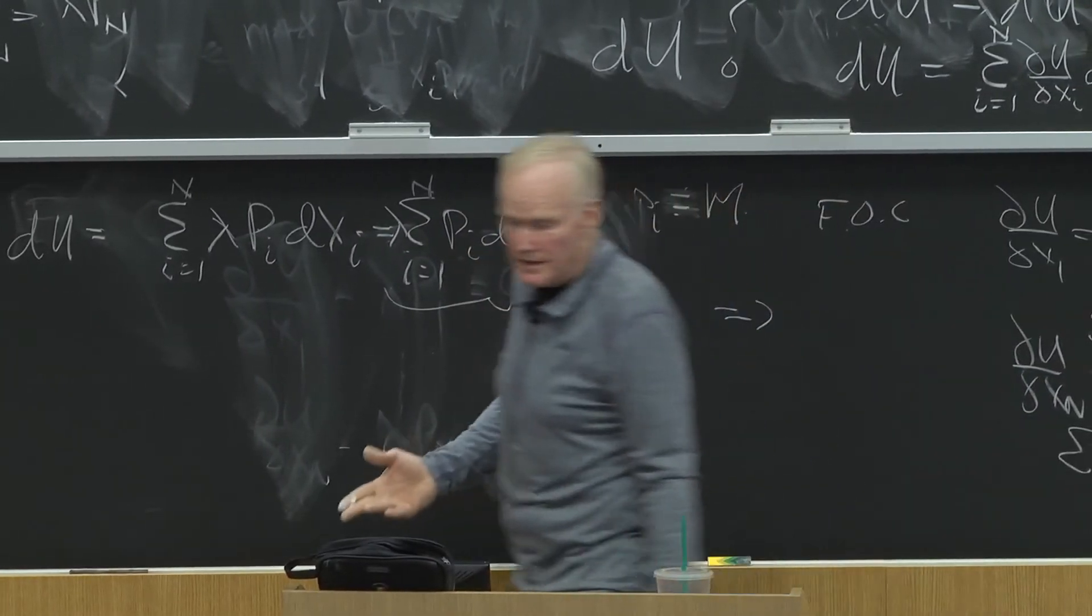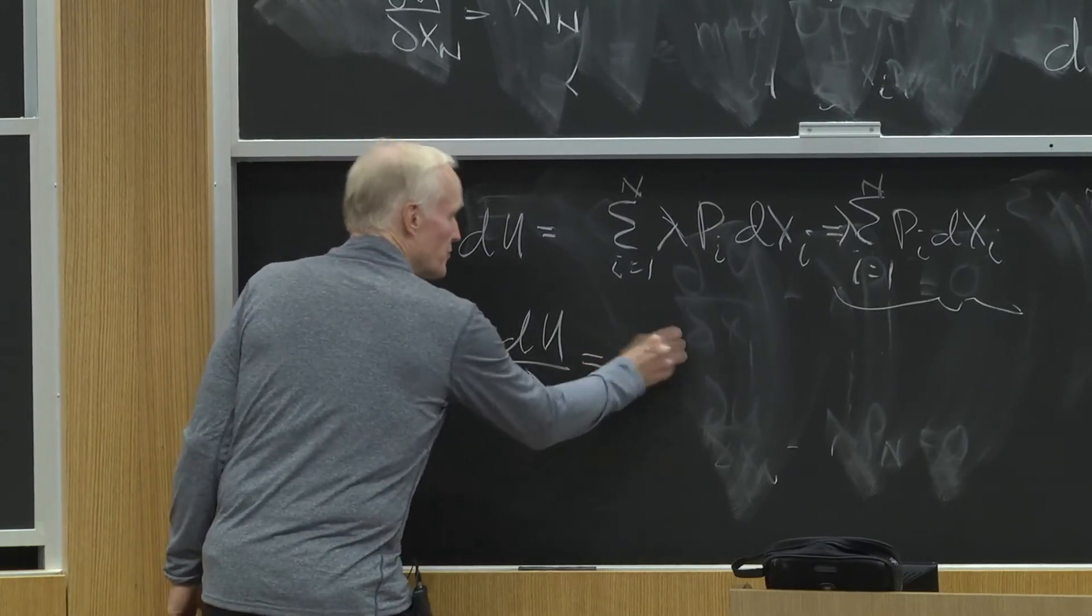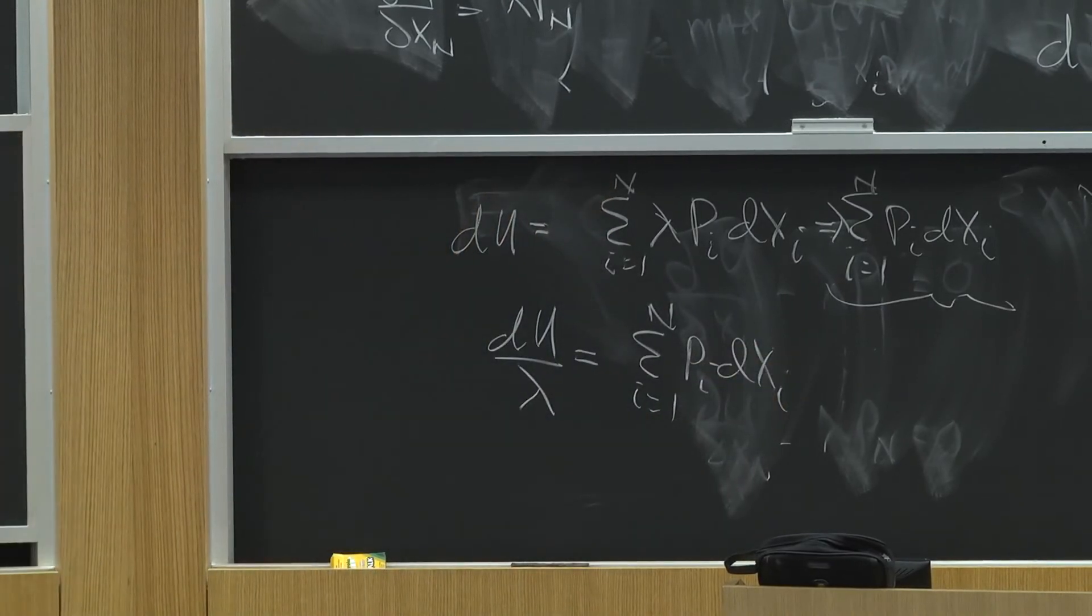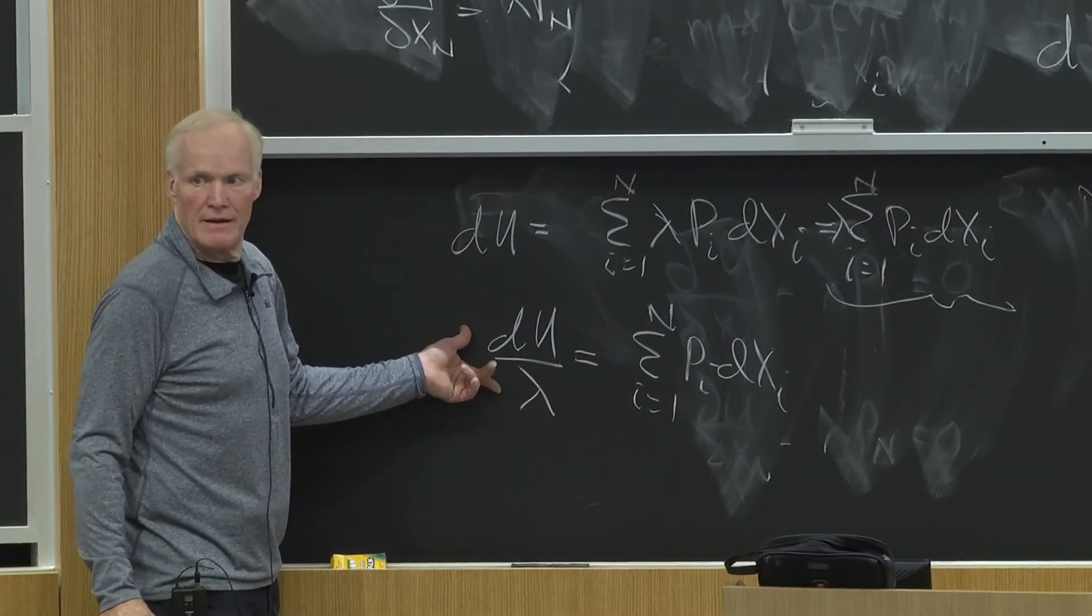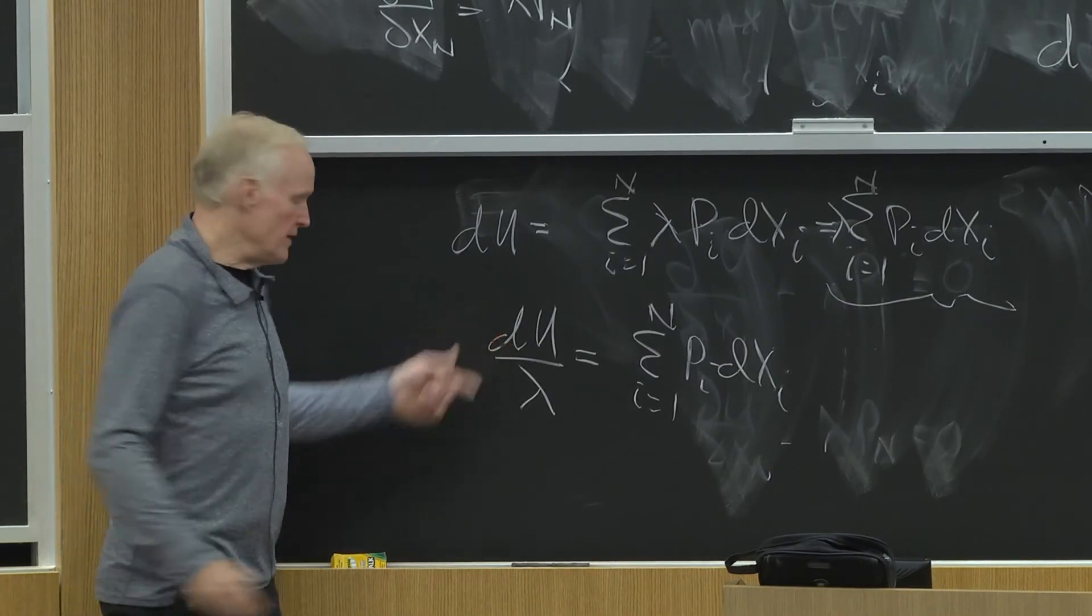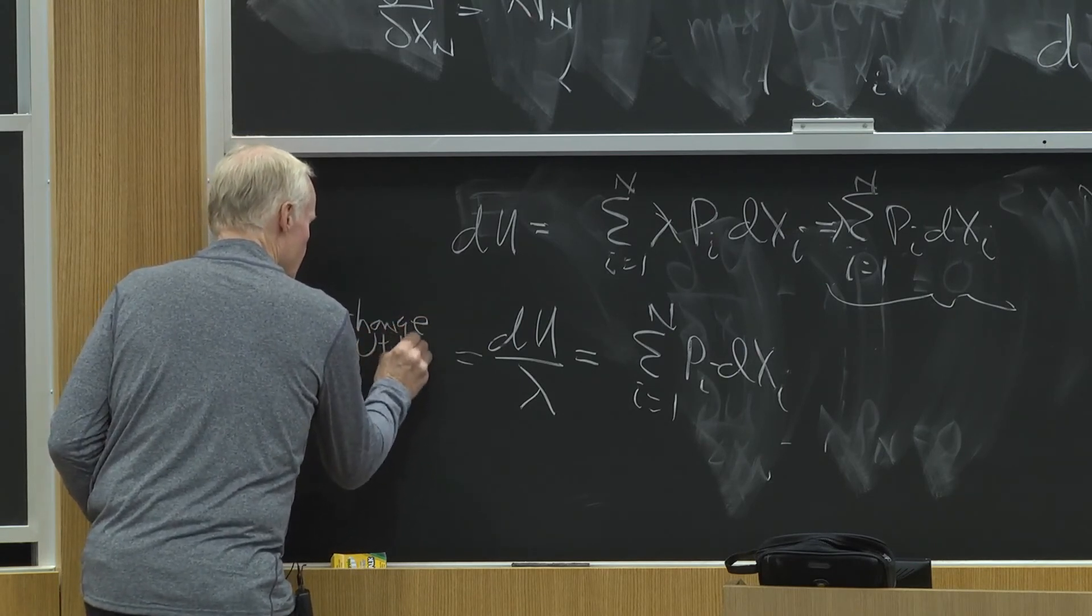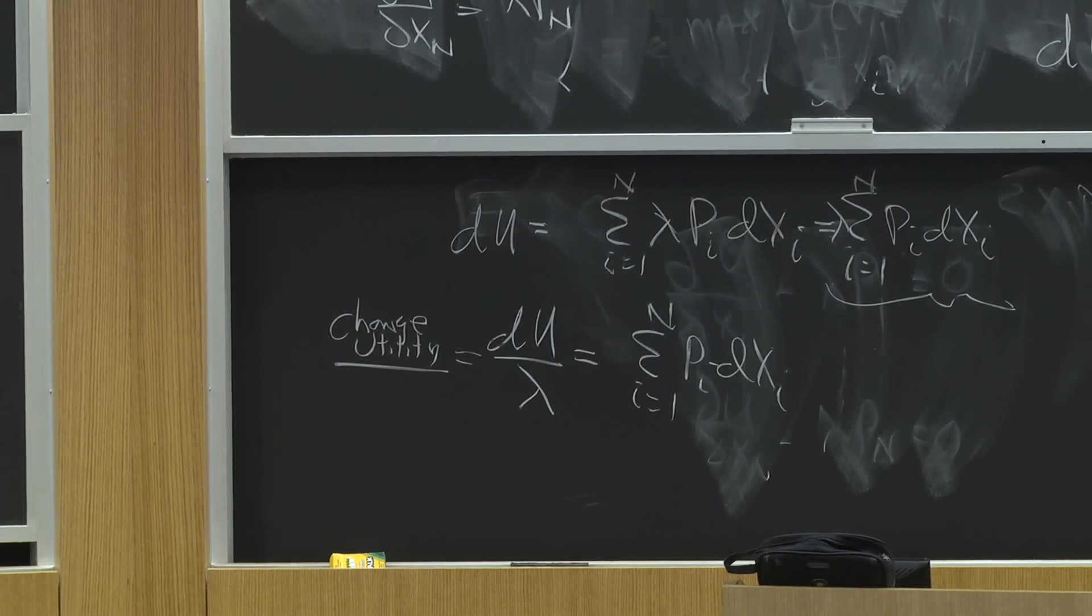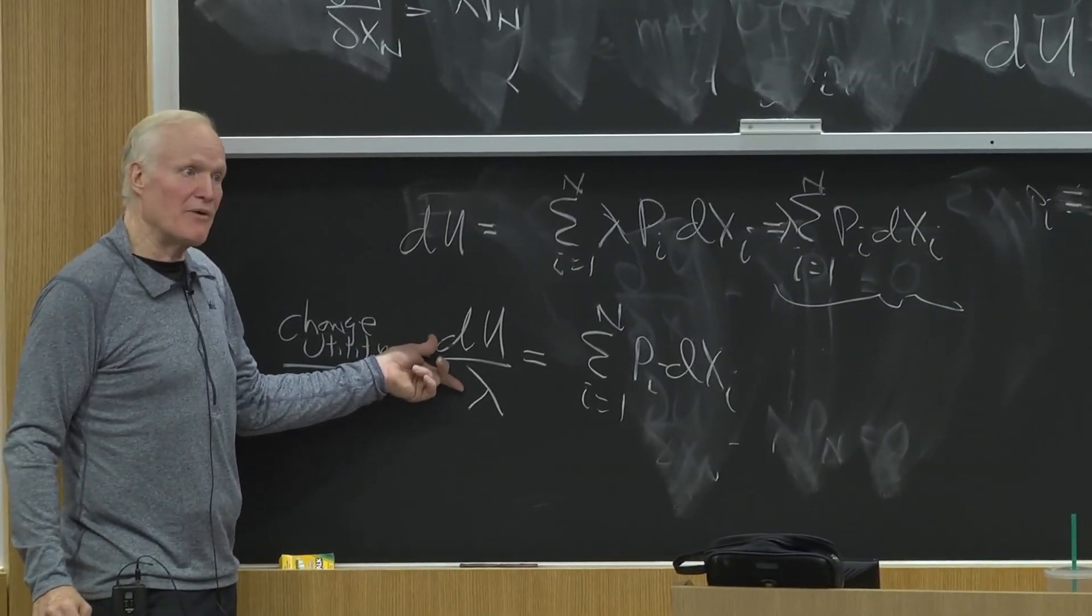This equation is going to tell me, but it's not only going to tell me whether he's better or worse off. It's going to say DU over lambda equals the sum from i equals 1 to n, pi dxi. Well, what is DU over lambda? Well, DU is a change in utility. And what is lambda? It's a change in utility per dollar of income.